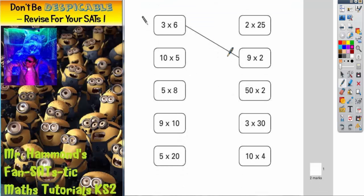Well let's see why that one has been done. 3 times 6 is 18 and 9 times 2 is 18. And obviously 18 and 18 are equal, so that's why it's been matched.